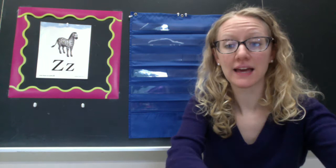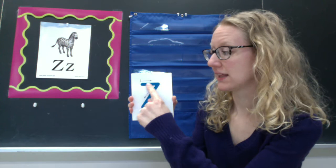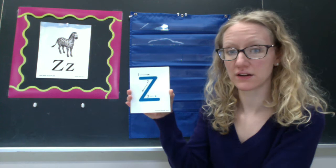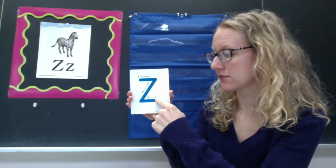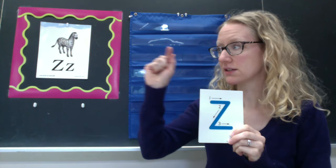To make a capital uppercase Z, you're going to start on the top line. You're going to make a straight line to the right. Then you'll slant down to the bottom and another small line to the right. Watch one more time. Small line, slant down to the bottom, another small line. Let's try this one in the air.